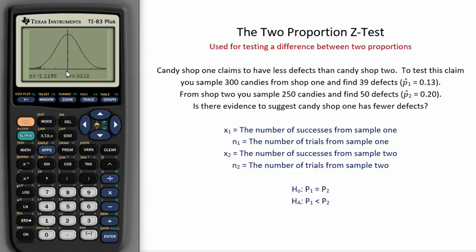We can reject the null with an alpha of 0.05 and say we have evidence for the alternative that the true proportion of defects from store 1 is less than the true proportion of defects from store 2.